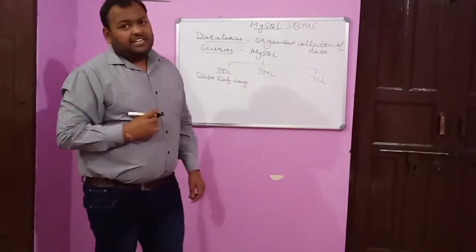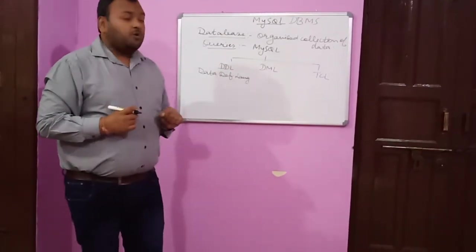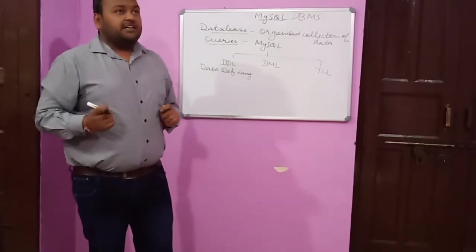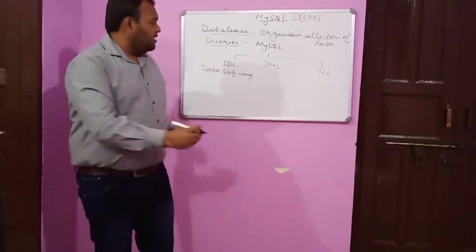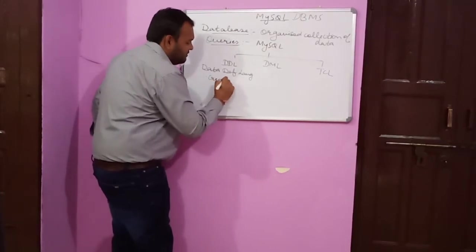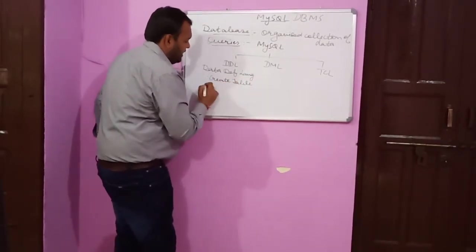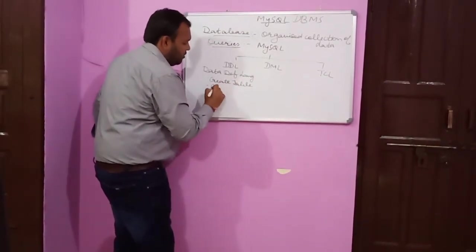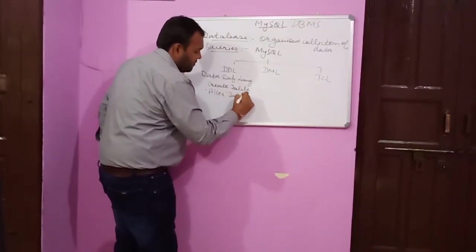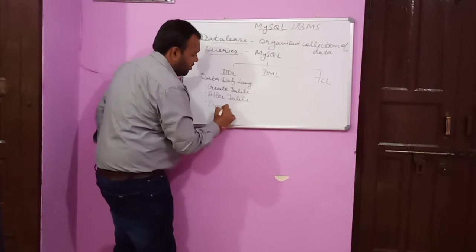First, let me put some light on DDL, which is Data Definition Language. The Data Definition Language is the statement which controls the structure, meaning the definition, of a table. It has three basic commands: number one is CREATE TABLE, number two is ALTER TABLE, and number three is DROP TABLE.